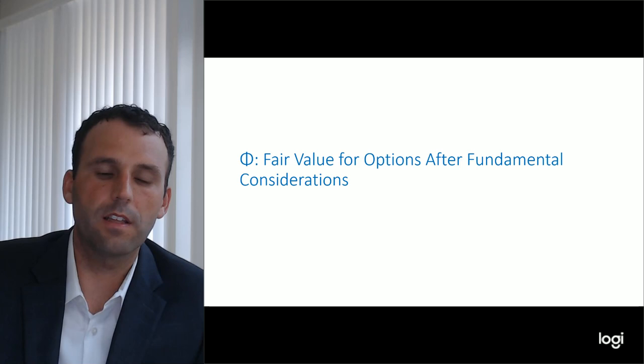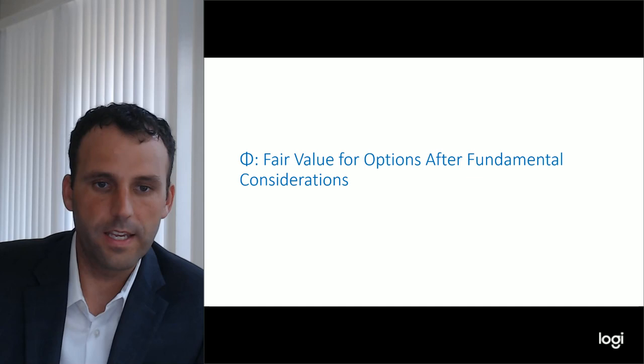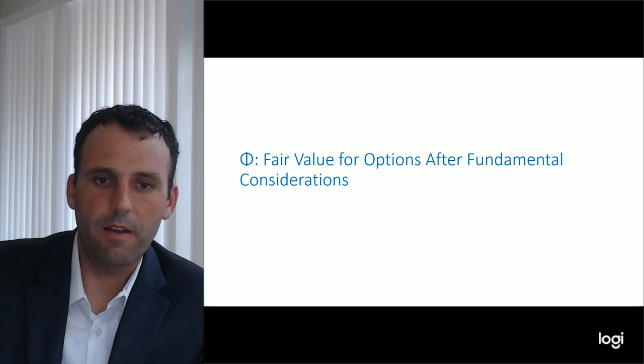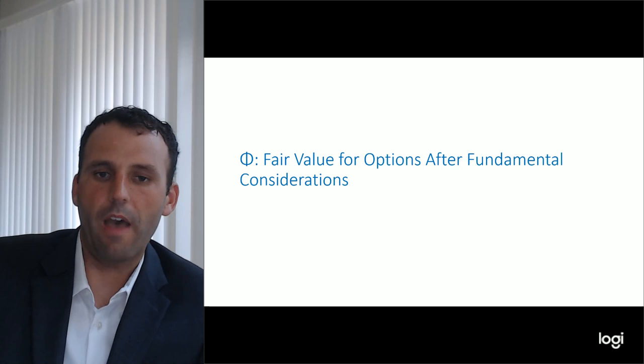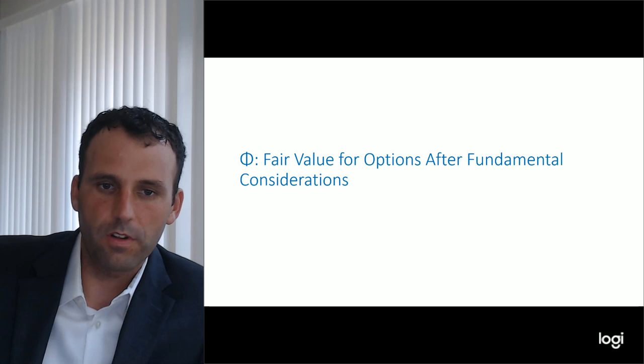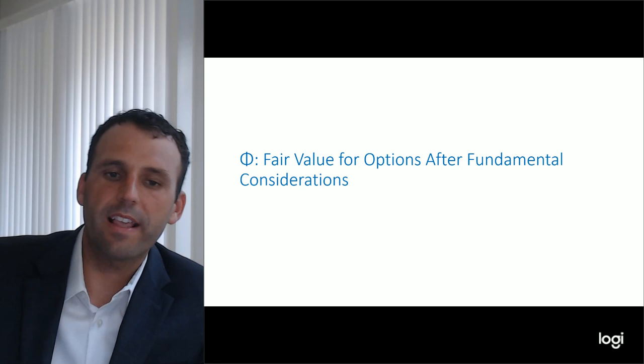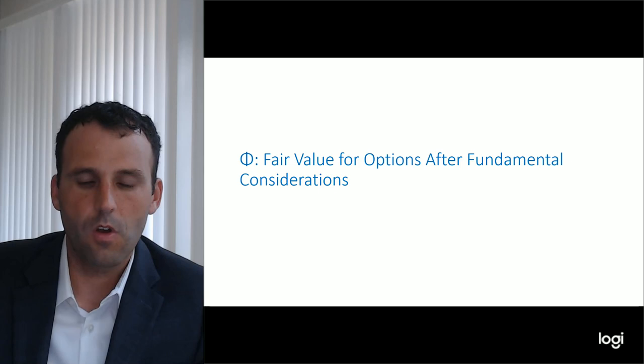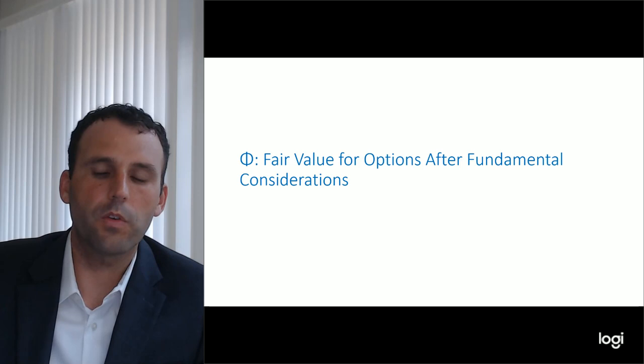It works the other way around too. If vol is cheap statistically but from a fundamental perspective it would be too much risk to hold a position that big, and I may have a stop at a tighter level, I would not want to pay for that option — I'd rather just buy the underlying. I use Phi because it's one of the few Greeks not really used in options terminology, to define how I figure out from a more fundamental, directional, or macro perspective what options may make sense for more directional traders that do not make sense for volatility traders and vice versa.